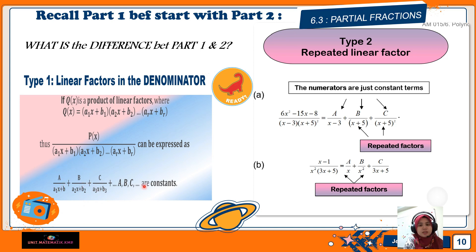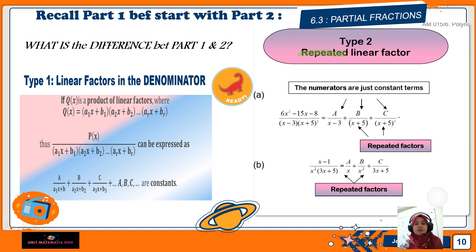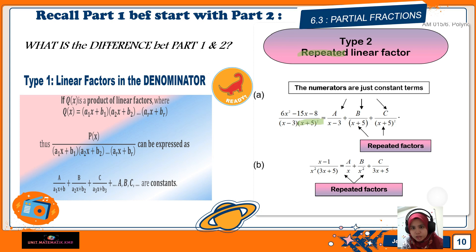You rewrite them in the form of partial fractions with constants A, B, C on the numerators. Now let's continue our learning with Type 2: repeated linear factors. For example, you have the question: 6x² − 15x − 8 over (x − 3)(x + 5)².